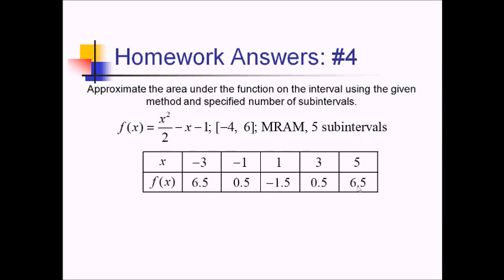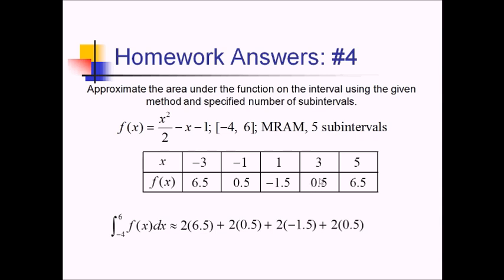Now we're going to calculate our rectangle areas. We've got a base of 2 for each of these rectangles. So for the first one, we've got 2 times 6.5, and we're approximating the integral from negative 4 to 6 of f of x. Note the approximately equals here, because we're approximating. Then we've got 2 times 0.5, 2 times negative 0.5, 2 times 0.5 again, and 2 times 6.5. Since all these are being multiplied by 2, I'm just going to add the decimals together and then multiply by 2. So 6.5 plus 0.5 is 7. We've got minus 1.5, that's going to be 5.5, then 6, and then adding 6 and 6.5, that's 12.5. Doubling that, I get 25.